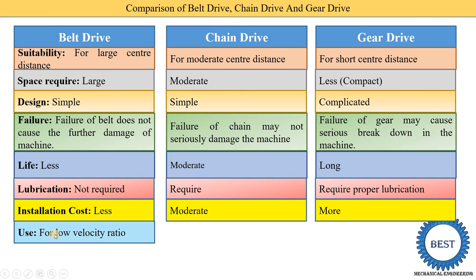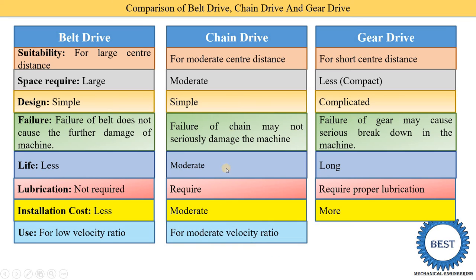Belt drive is used for low velocity ratio — the driving pulley and driven pulley have different diameters, giving a different velocity ratio, so belt drive is used for low velocity ratio. Chain drive is used for moderate velocity ratio. Gear drive is used for very high velocity ratio.